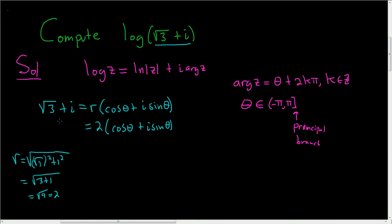Dividing everything by 2, we end up with the square root of 3 over 2 plus 1 half i equals cosine theta plus i sine theta.